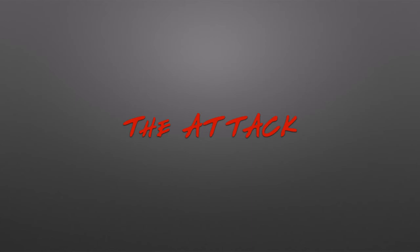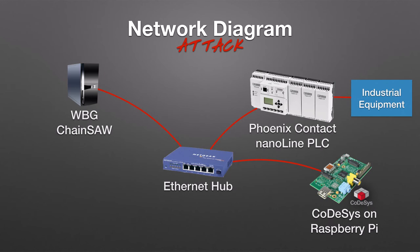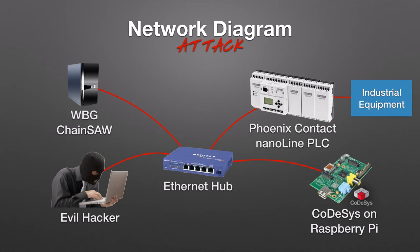Let's focus on how the latter attack works for now. The devices used in this system are all connected to an Ethernet hub. In a real-world implementation on a switched network, the Chainsaw device would be connected to a span port or a network tap. To begin the attack, our evil attacker gains access to the network and wants to overfill our vessel.